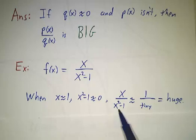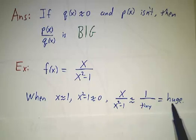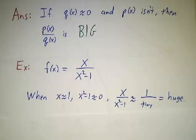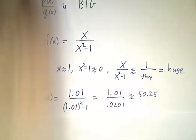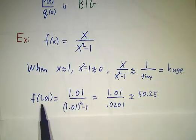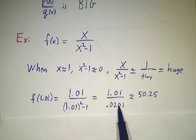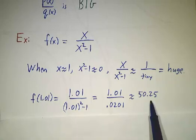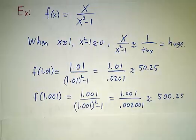The closer you get to one, the bigger the number is. There is no limit. We say it's infinity. The process doesn't finish. So for example, if you plug in 1.01, you do the arithmetic, you get about 50, a little over 50. You plug in 1.001, you get a little over 500.